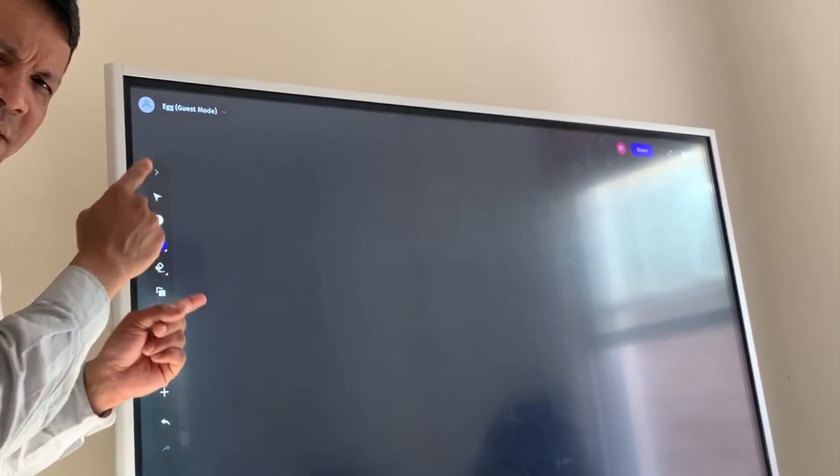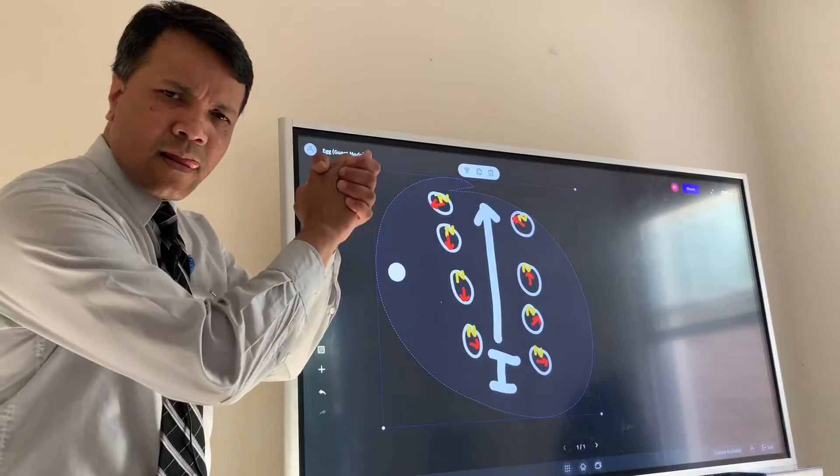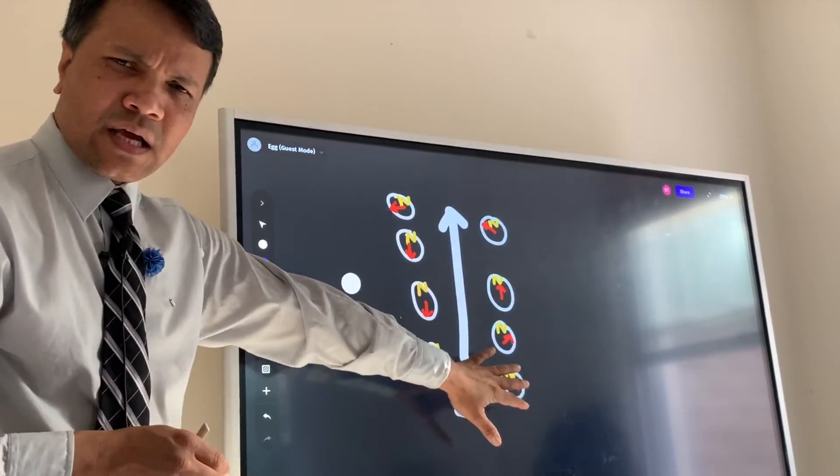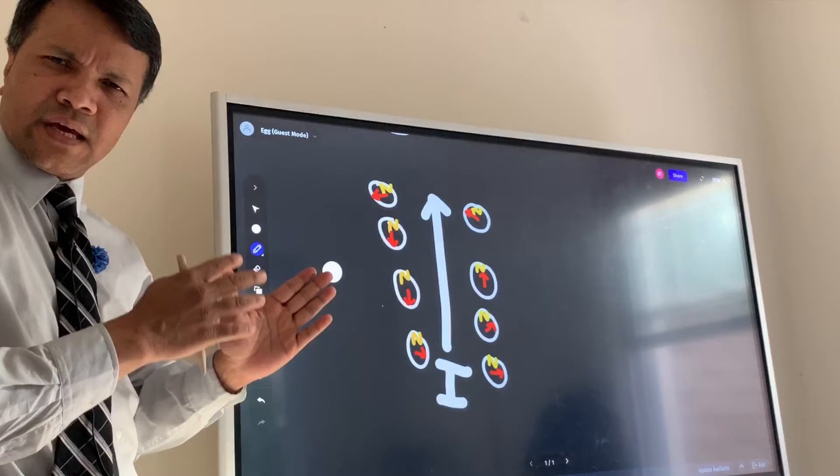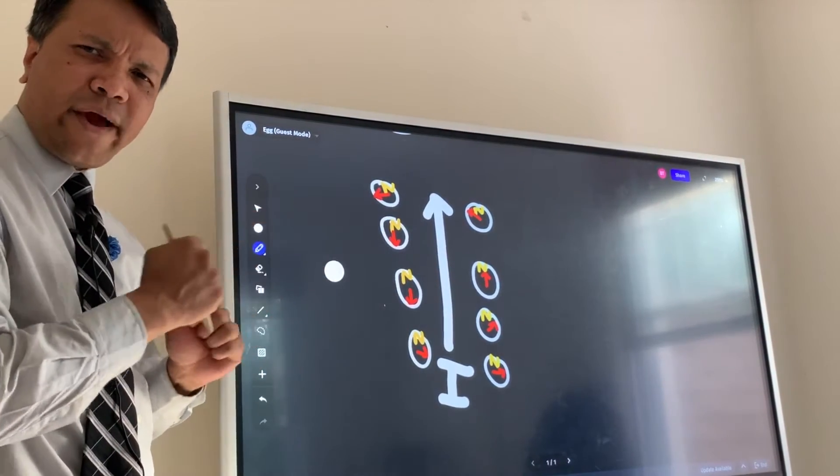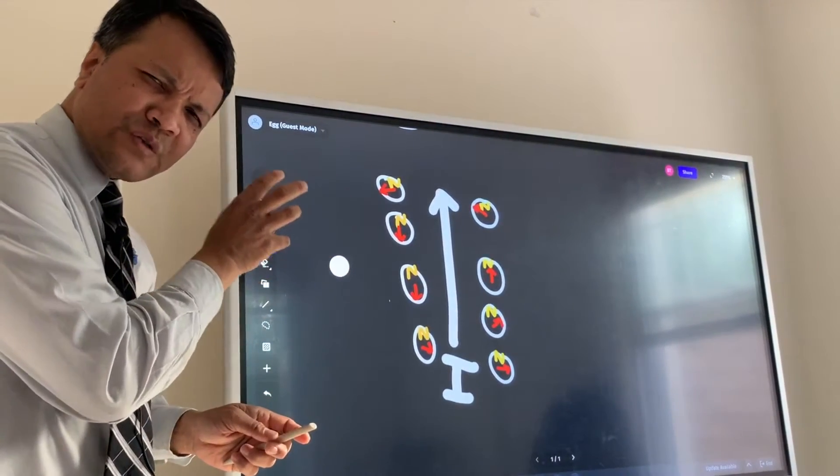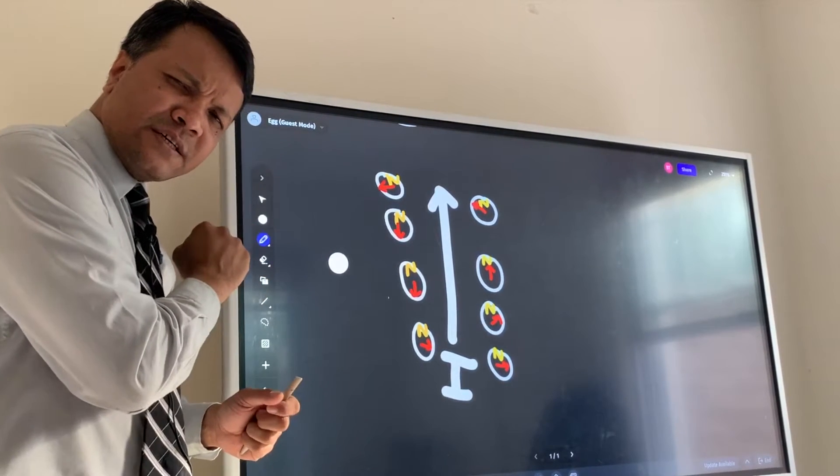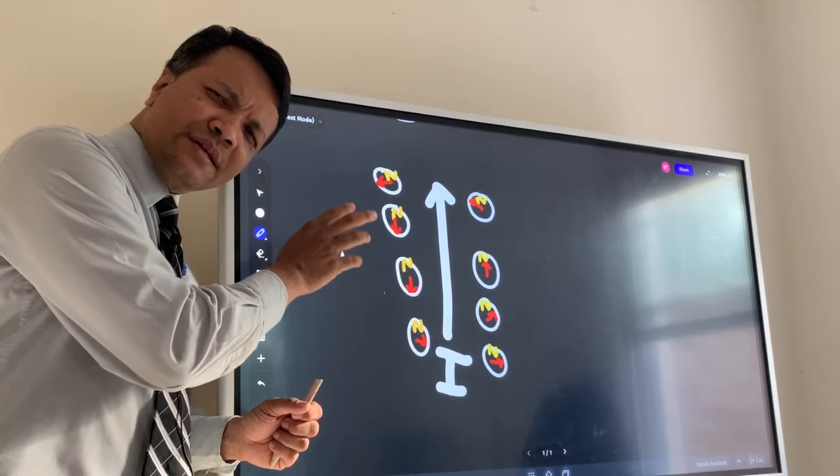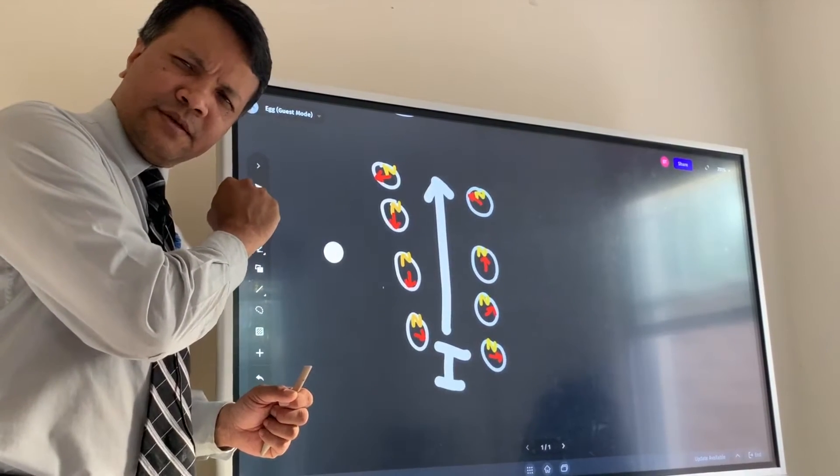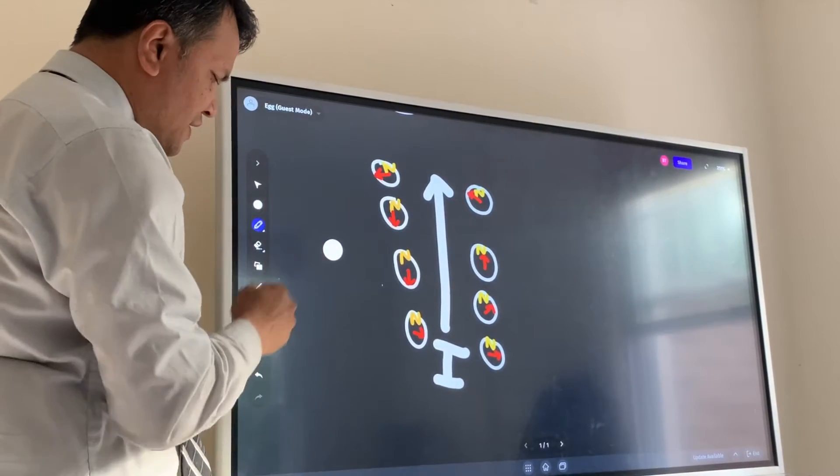Here's what he discovered. He put eight compasses around the current-carrying wire and he saw the compass needles deflected. The needles deflected as soon as there is a current in the wire. This deflection is circular.